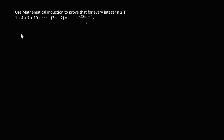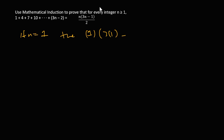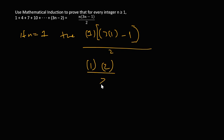First we should test if it's true when we put n equals one. If n equals one, then the expression becomes: three times one minus one, all in brackets, all over two. Working that out: inside the bracket it's going to be two, and two over two gives one. So if n equals one, the answer is one.